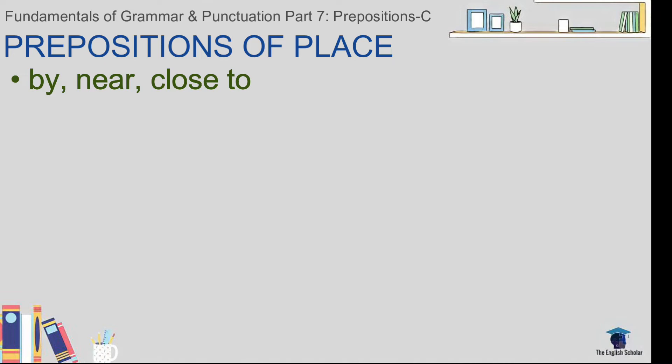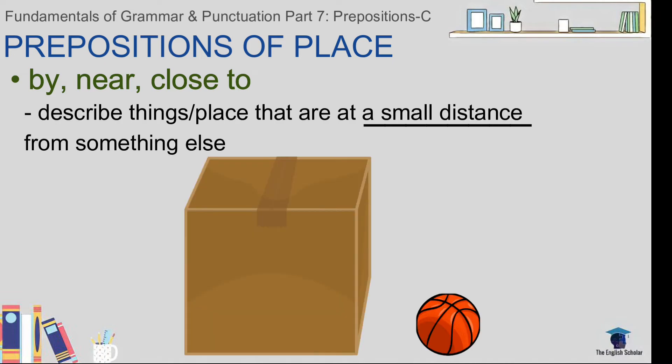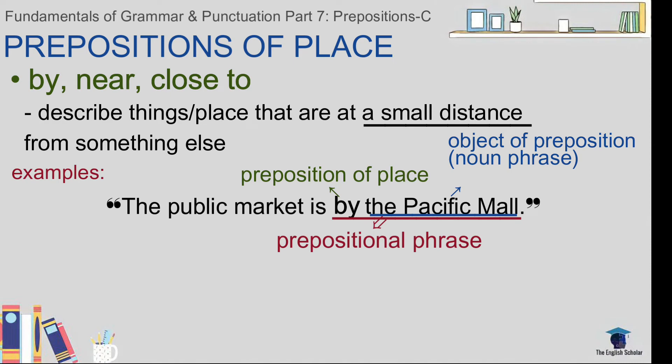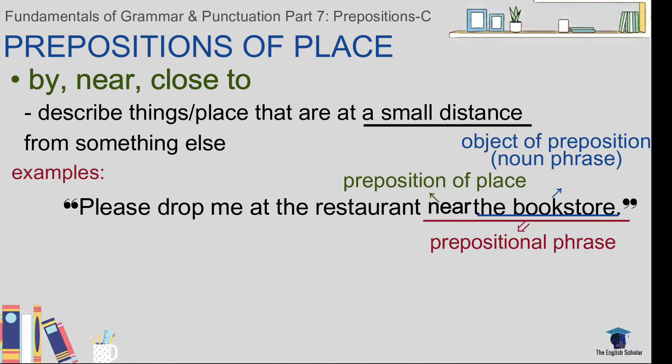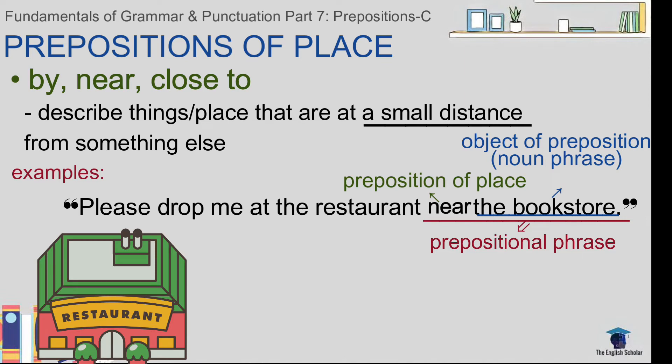Next: 'by,' 'near,' and 'close to.' These prepositions express the same meaning, so they are grouped under one category. They describe things that are at a small distance — meaning they are not too far. For example: 'The public market is by / near / close to the Pacific Mall.' They all express the same meaning. Another example: 'Please drop me at the restaurant by / near / close to the bookstore.'